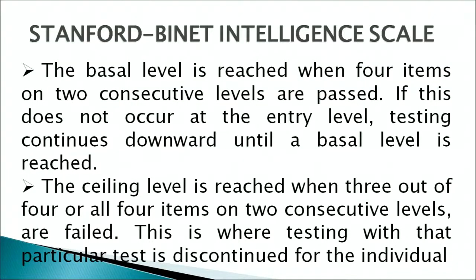The second stage is where the examiner establishes the basal level and a ceiling level for each test in terms of actual performance. The basal level is reached when 4 items on 2 consecutive levels are passed. If this does not occur at the entry level, then the testing continues downward until a basal level is reached. The ceiling level is reached when 3 out of 4 or all 4 items on 2 consecutive levels are failed — that is, the person's efficiency is sealed at that level.